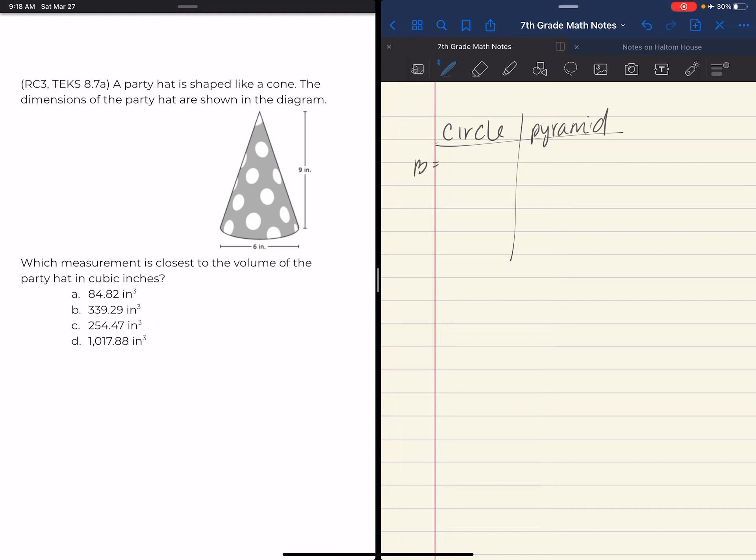For a circle, we have pi r squared. For the volume of a pyramid, we do base times height divided by 3. I can see that my diameter is 6, therefore my radius is 3.